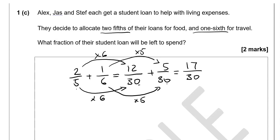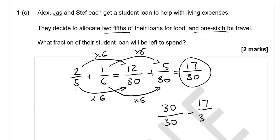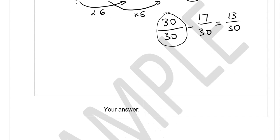Seventeen thirtieths is how much is spent on food and travel altogether. To find what's left, we take seventeen thirtieths away from thirty thirtieths — which represents the whole amount — and that leaves us with thirteen thirtieths. So thirteen thirtieths is the answer.